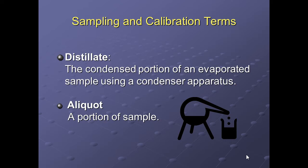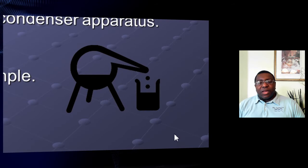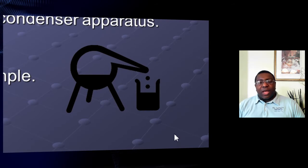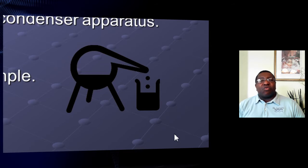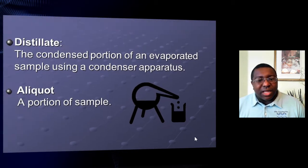The amount of acid used to reach endpoint tells you the range and concentration of your sample. A distillate is the condensed portion of an evaporated sample using a condenser apparatus. The slide picture shows liquid at the bottom being heated, steam rising, condensing, and dripping out into a beaker — that condensate is what you're collecting and analyzing.